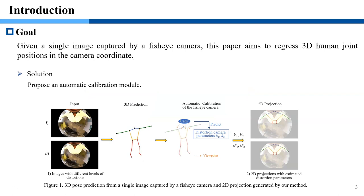The goal of the paper is to regress 3D human joint locations in the camera coordinate from a single image captured by a fisheye camera. To alleviate the negative impact of image distortions on 3D pose estimation, we propose an automatic calibration module.